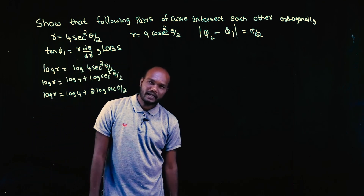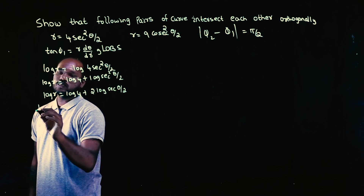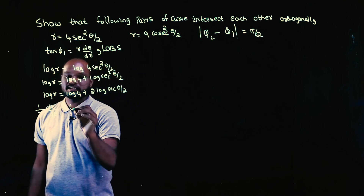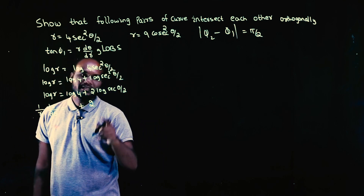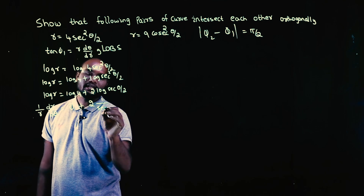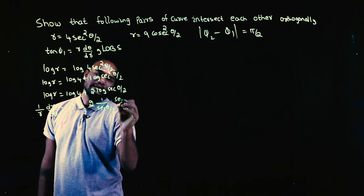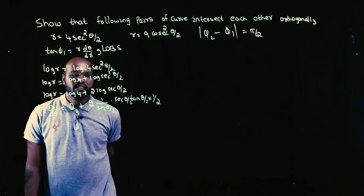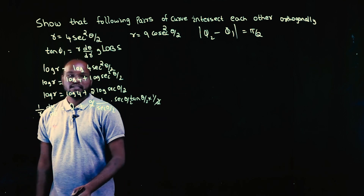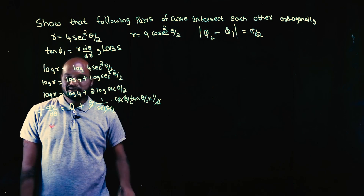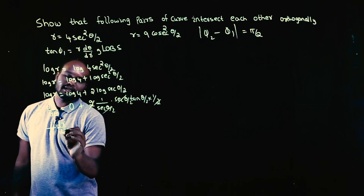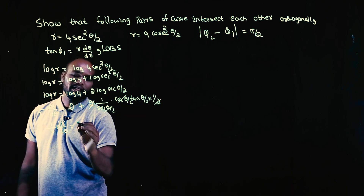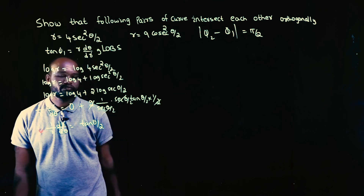Now let's differentiate. The differentiation of log r is (1/r)(dr/dθ). The differentiation of log 4 is 0. Then plus 2, keeping it as is: the log differentiation gives 1/sec(θ/2), and the differentiation of sec(θ/2) is sec(θ/2)tan(θ/2) times the derivative of θ/2 which is 1/2. The 2 and the 2 cancel, and sec(θ/2) cancels, so (1/r)(dr/dθ) = tan(θ/2).